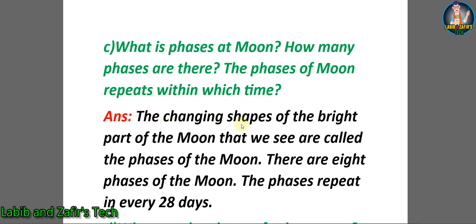Answer: The changing shapes of the bright part of the moon that we see are called the phases of the moon. There are 8 phases of the moon. The phases repeat in every 28 days.